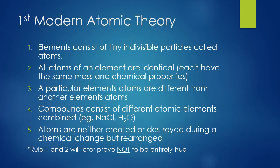For postulate two, all atoms of an element are identical. Identical is a strong word. All atoms of an element are very similar — they have the same atomic number, but they can differ in other ways. So that's why postulate two isn't entirely true anymore. However, these were true at the time that John Dalton came up with this theory.